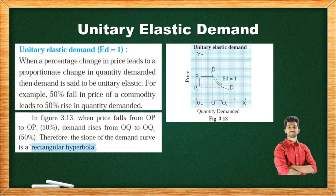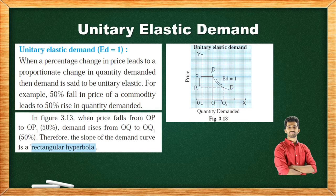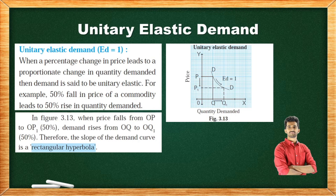Unitary Elastic Demand — ED equal to 1. When a percentage change in price leads to a proportionate change in quantity demanded, demand is said to be Unitary Elastic. For example, a 50% fall in price leads to a 50% rise in quantity demanded. In figure 3.13, when price falls from OP to OP1, that is 50%, demand rises from OQ to OQ1, 50%. Therefore, the slope of the demand curve is a rectangular hyperbola, indicating ED equal to 1.